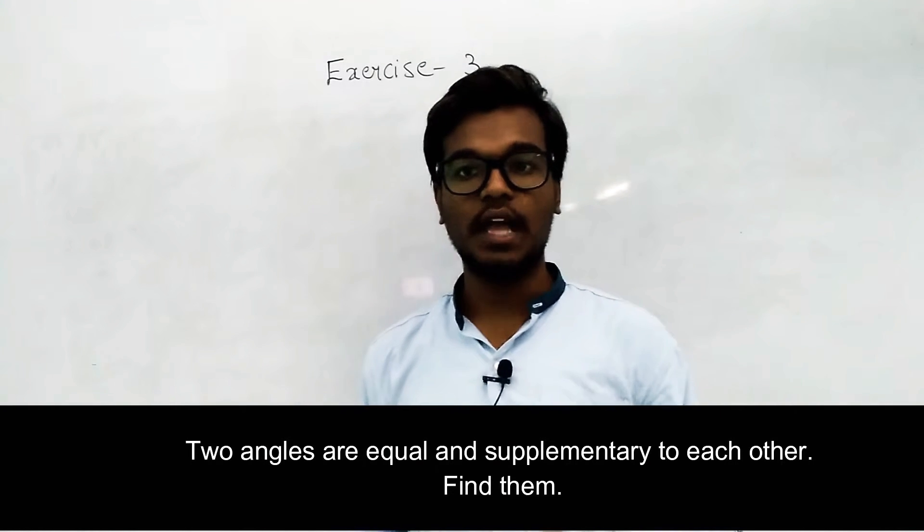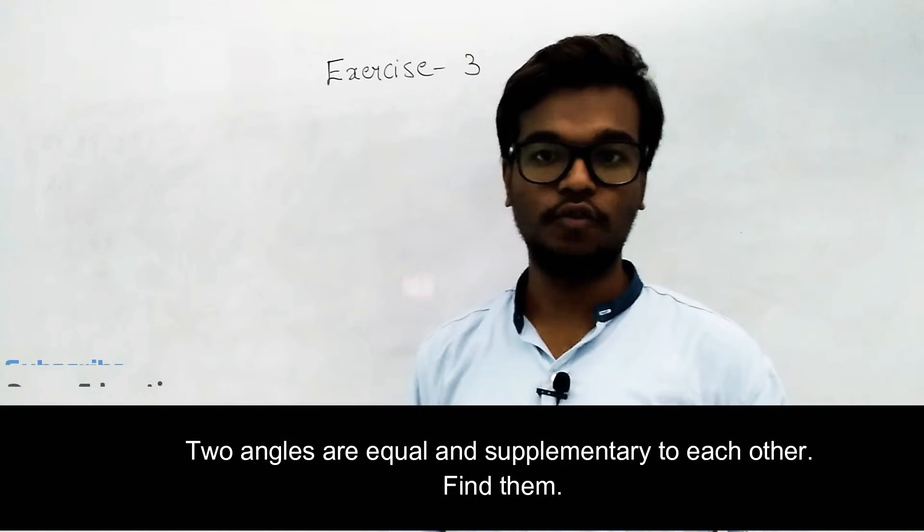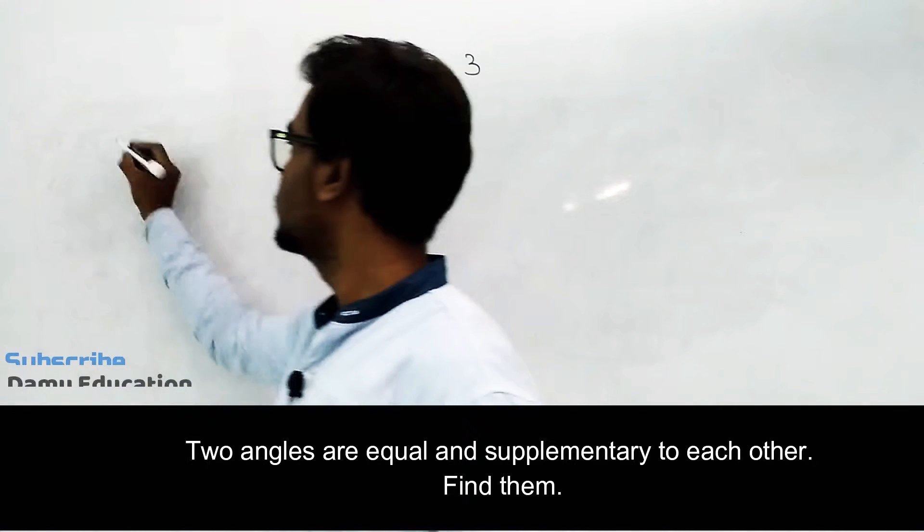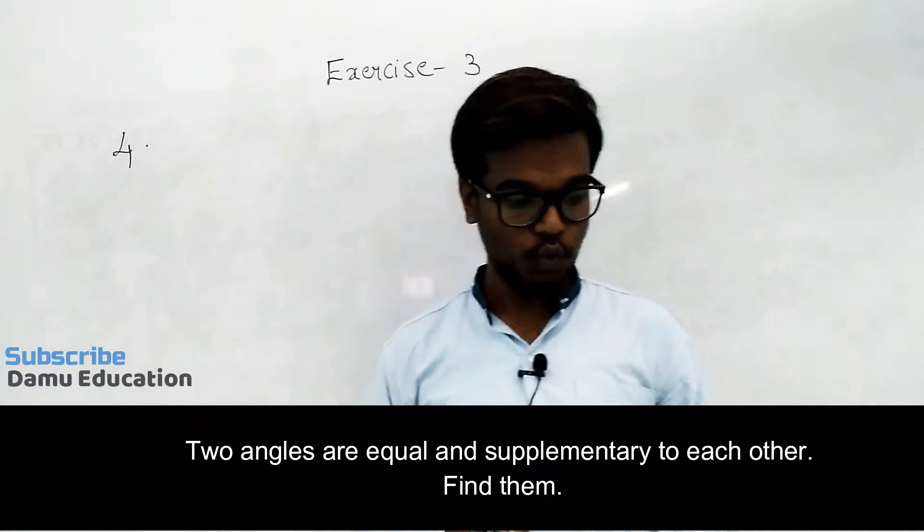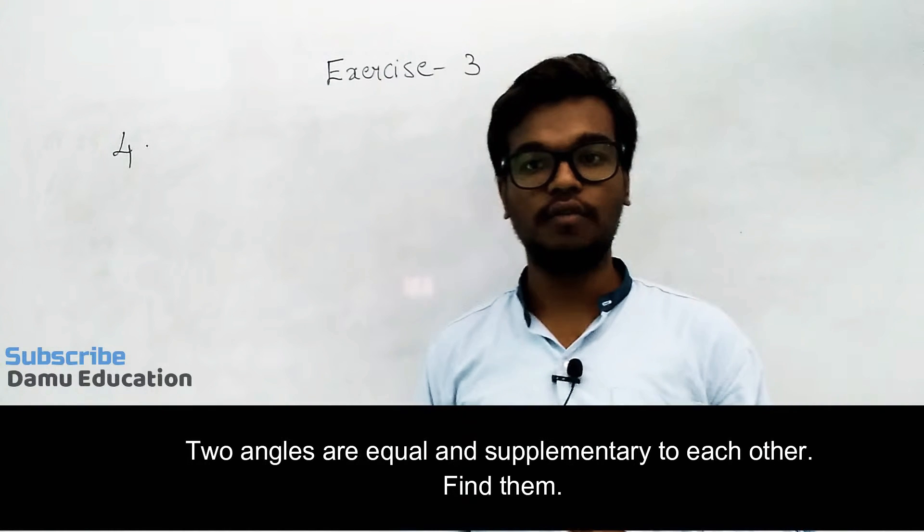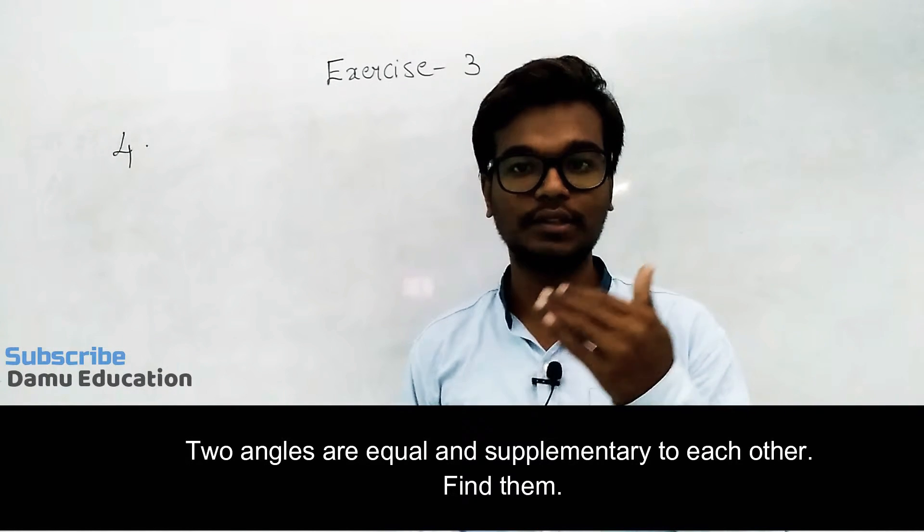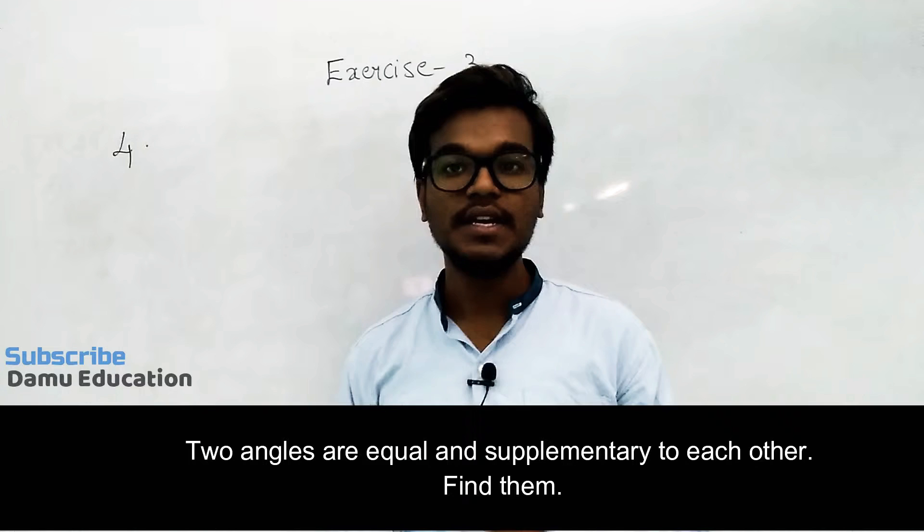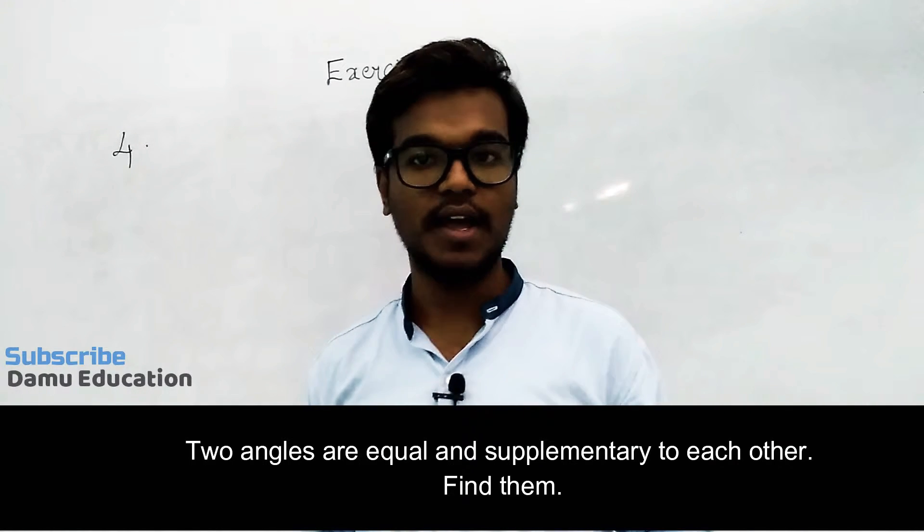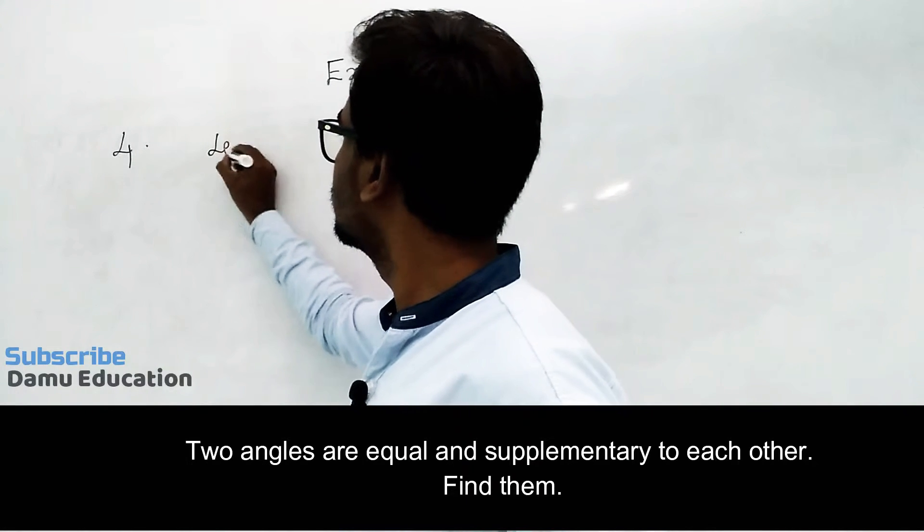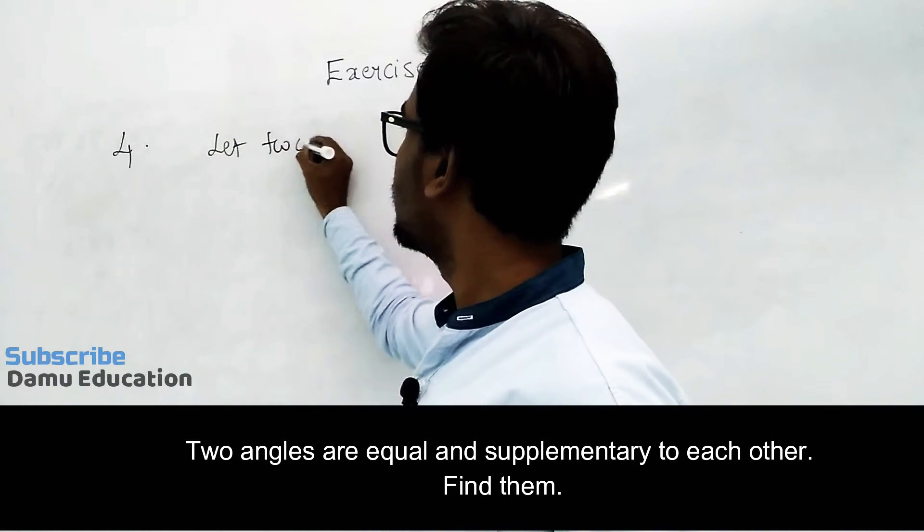In this module we are going to discuss the solution for the fourth question in Exercise 3. The question is: if two pairs of angles are equal to each other and the two angles are supplementary angles, what are those angles and justify the answer.